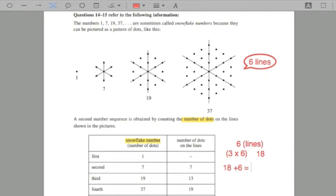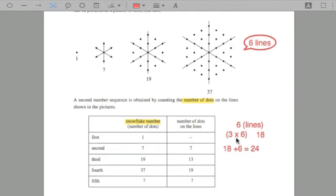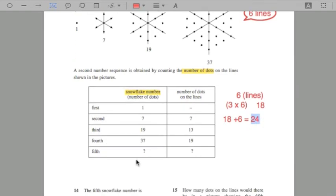24. So we know that the dots all around here on the fifth row should be 24. And to get the fifth number of snowflakes, all you have to do now is use the fourth. So 34, sorry,